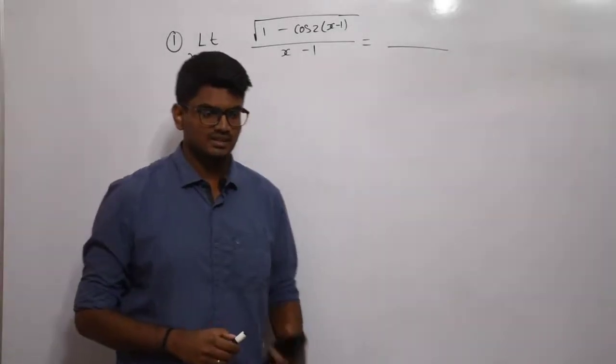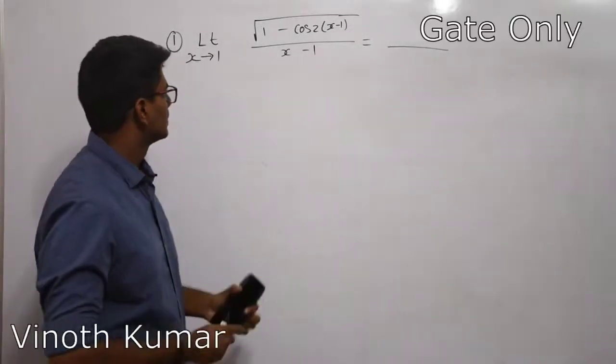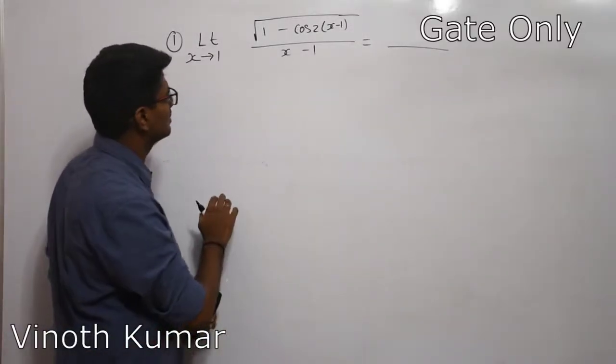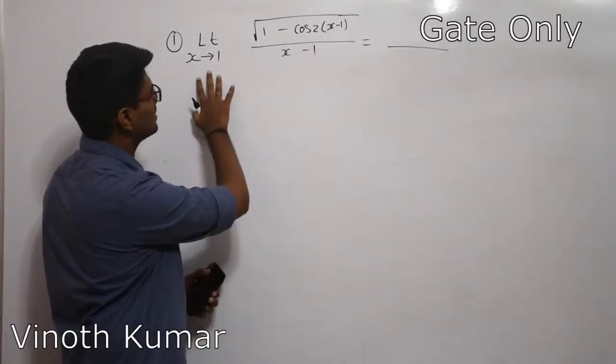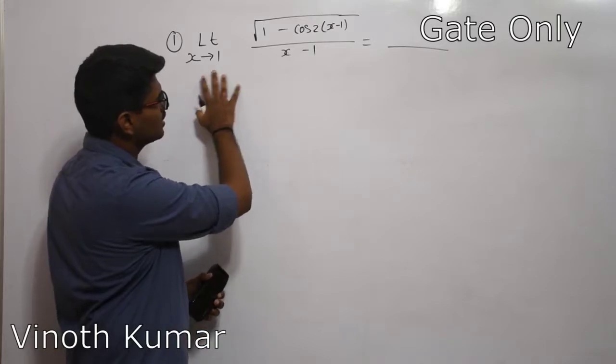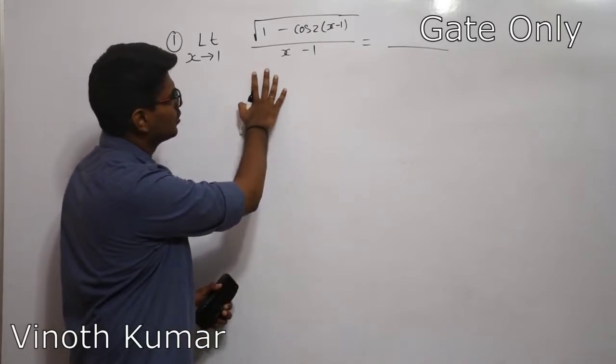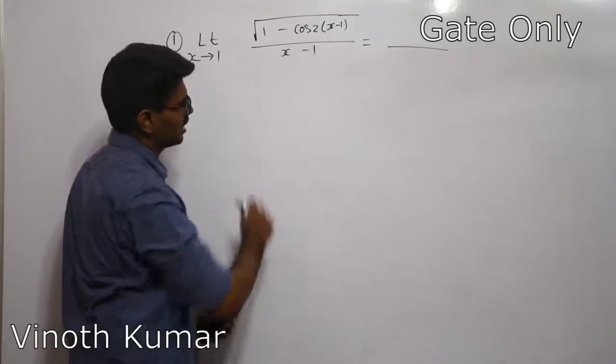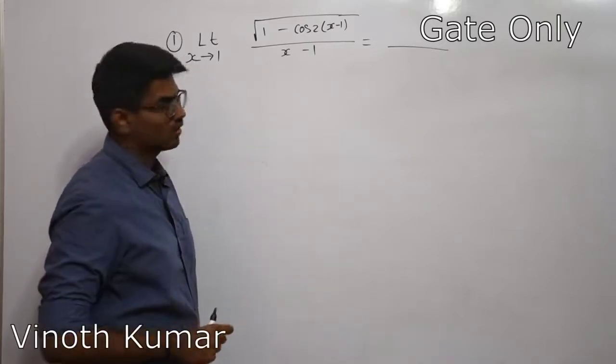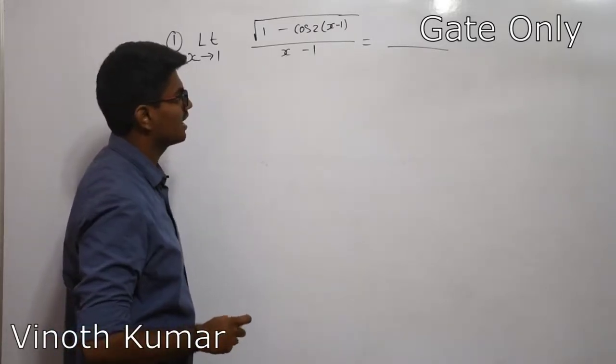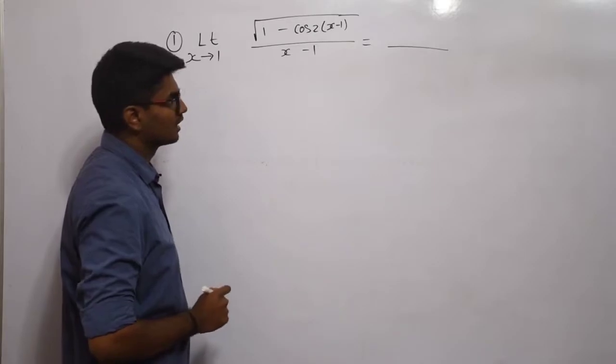We will do a problem in limits. It is a simple problem. Limit x tends to 1, root of 1 minus cos 2(x minus 1) divided by x minus 1.